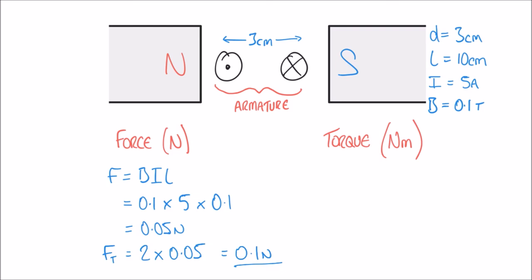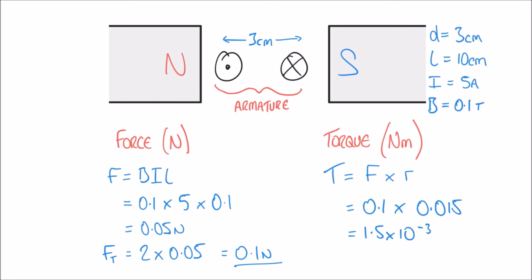Finally, to calculate the torque of the motor we use the formula T = F × r, where F is the total force and r is the radius. We must remember that we were given the diameter of the armature, not the radius. So: T = 0.1 × r, and since the diameter is 3 centimeters, the radius is 1.5 centimeters, or 0.015 meters. Calculating that gives a torque of 1.5 × 10⁻³ newton meters.